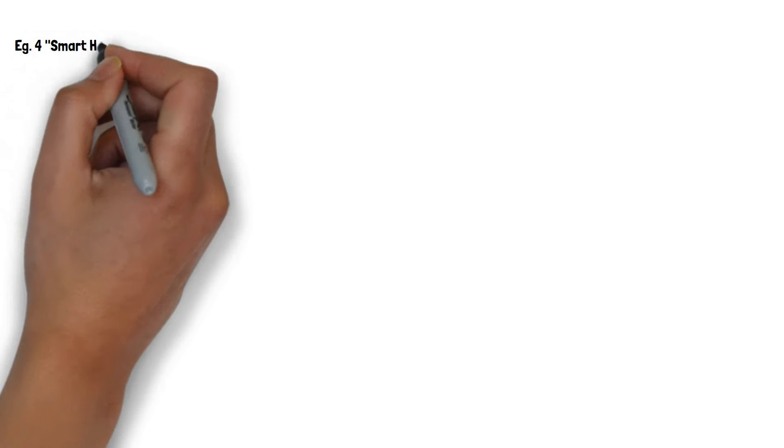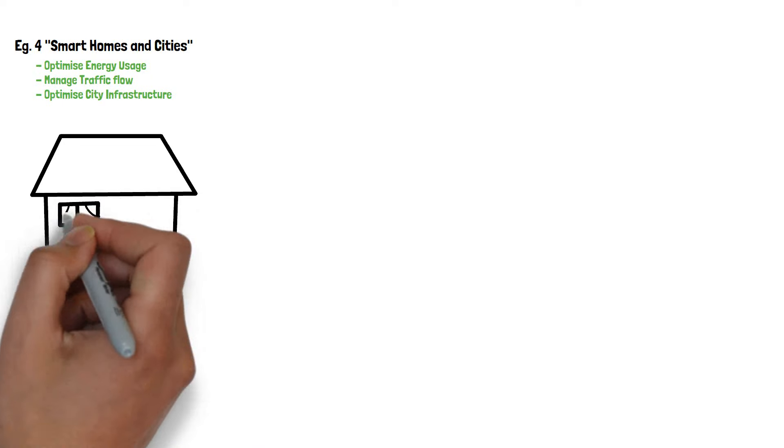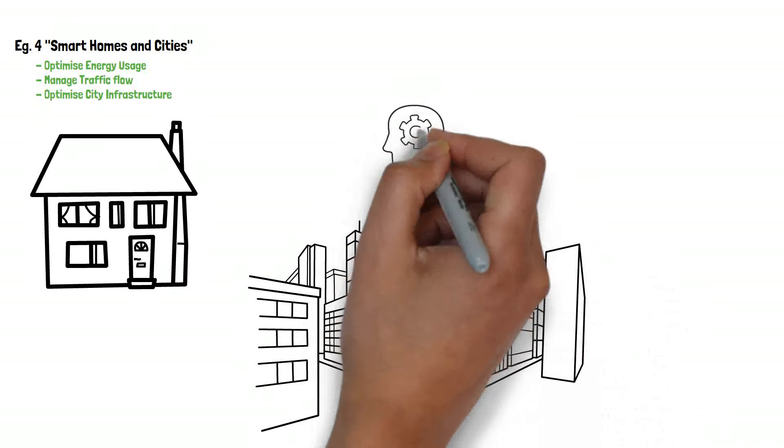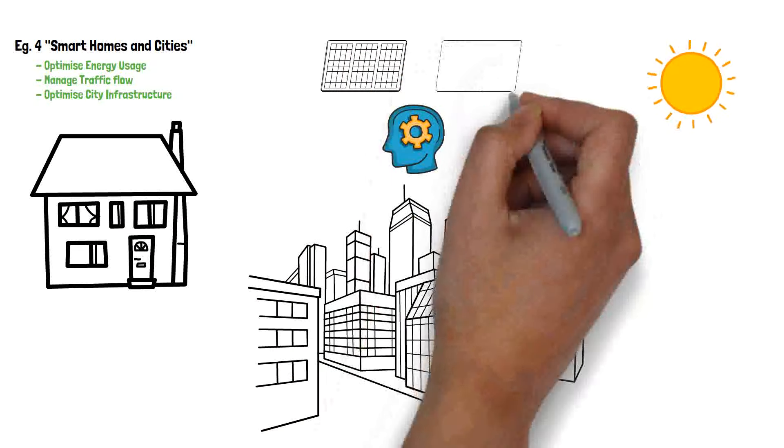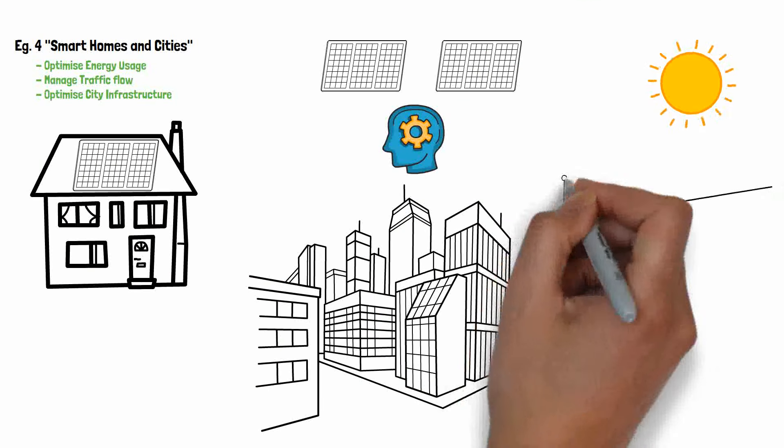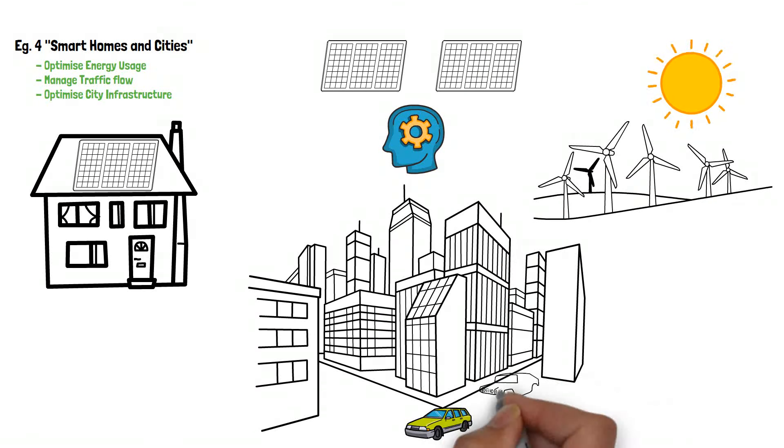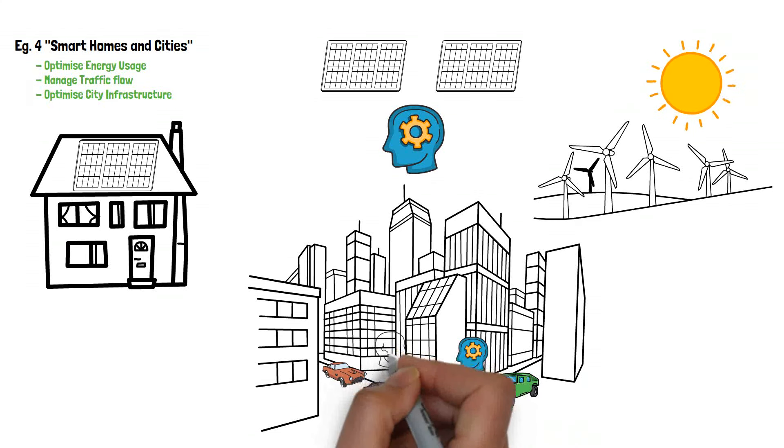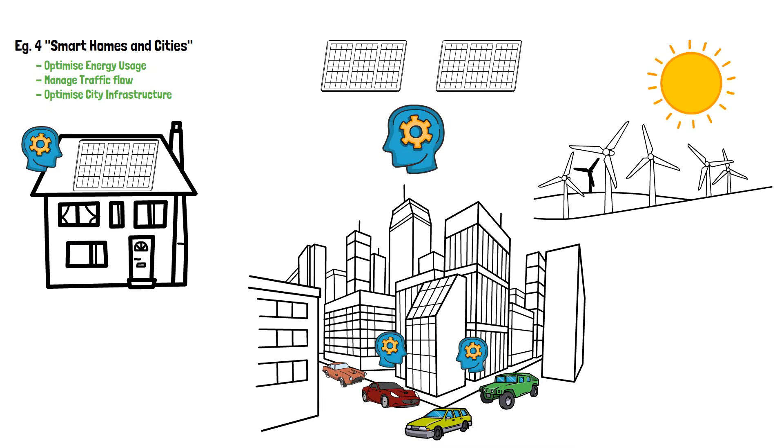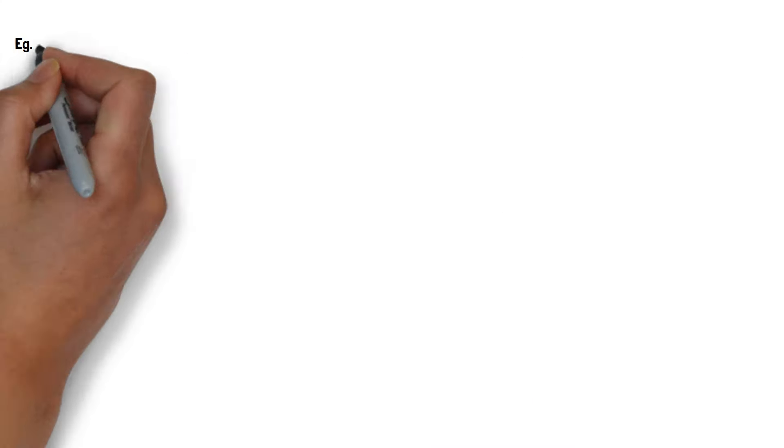Another example is smart homes and cities. AI could be used to control and optimize energy used in buildings and homes, making them more sustainable and efficient. AI could also be used to manage traffic flow and optimize city infrastructure.